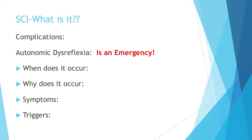The worst complication for SCI is autonomic dysreflexia — this is an emergency. It usually occurs with lesions at or above the level of T6, and typically after the spinal shock has resolved, sometimes years after the injury. It occurs when the autonomic system is exaggerated. You might see severe headache, sudden spike in blood pressure, diaphoresis, nausea, nasal congestion, and bradycardia. This sudden increase in blood pressure can also lead to a sudden increase in ICP.